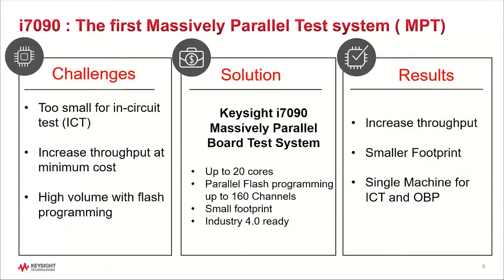As a final reminder from the last session, the i7090 has been designed with the following challenges in mind: having a product that is too small physically or in terms of density for in-circuit tests, willingness to increase throughput at minimum cost, and coupling in-circuit tests with flashing for high-runner products. The Keysight i7090 — the first massively parallel test system — is the solution with its 20 cores, capable of parallel flash programming up to 160 channels, a small footprint, and Industry 4.0 readiness. Lacroix achieved higher throughput in a smaller footprint using a single machine. Now let's get deep into software with my colleague Jun Balang.